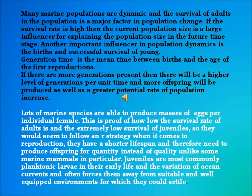Many marine species are able to produce masses of eggs per individual female. This reflects how low the survival rate of adults is and the extremely low survival rate of juveniles, suggesting they follow an R-strategy when it comes to reproduction. They have a shorter lifespan and need to produce offspring for quantity instead of quality. Juveniles are most commonly planktonic larvae in their early life and the variation of ocean currents often forces them away from suitable environments where they could settle.